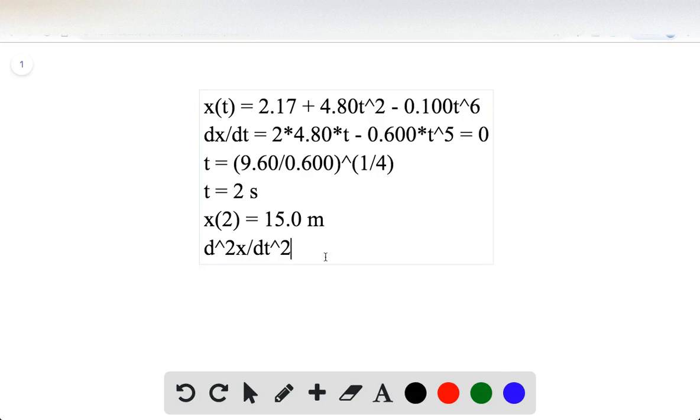The second derivative of the position equation with respect to time is simply 9.60 minus 3.00 times t to the fourth, which when plugging in t equals 2, gets negative 38.4 meters per second squared.